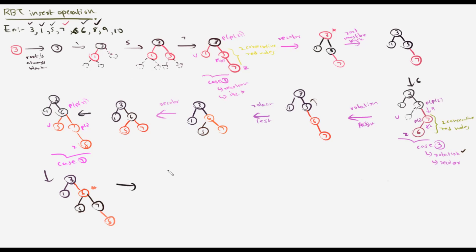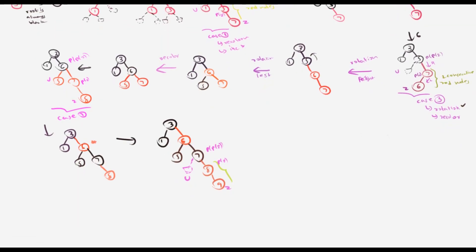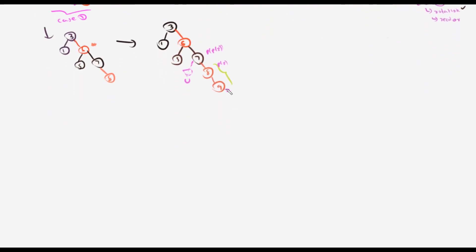Let me insert 9. The tree now has 3, 1, 6, 5, 7, 8, 9. We again have two consecutive red nodes. This is Z (9), PZ (8), PPZ (7), and the uncle is black (null node). The uncle is black and the new inserted node 9 is a right child of 8, so this is Case 2.